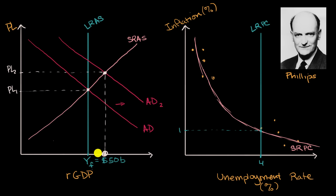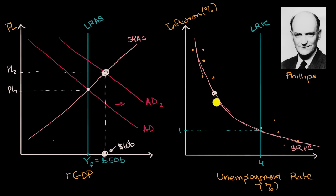In the short run, the economy is operating above potential. We move along the short-run Phillips curve: unemployment falls and inflation rises. This point on the AD/AS diagram — output at $60 billion — corresponds to a point on the short-run Phillips curve where the unemployment rate is 2% and the inflation rate is 3%.